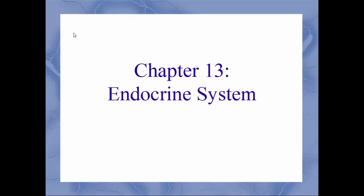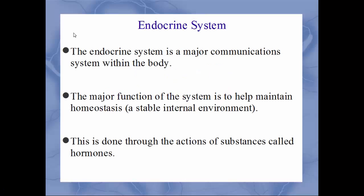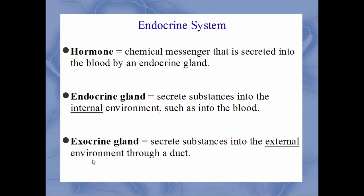We will begin chapter 13, the endocrine system. The endocrine system is involved with major communications within the body, in addition to the nervous system. Its biggest function is to keep the body at homeostasis — a stable internal environment — accomplished through substances called hormones.